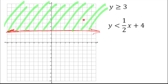Now let's continue to the system. With the first inequality graphed, I go to the second inequality. We have Y by itself, so this is written in slope-intercept form. My y-intercept is 4 — I go to y=4 on the y-axis. My slope is rise over run: 1 over 2. Starting at the y-intercept, I go 1 up and 2 to the right to get my second point.